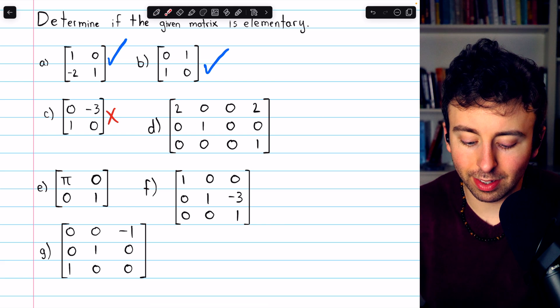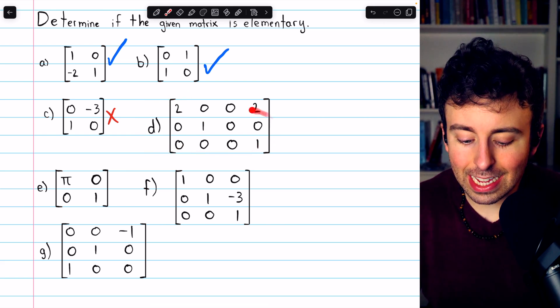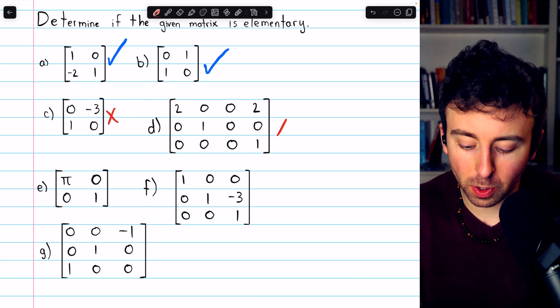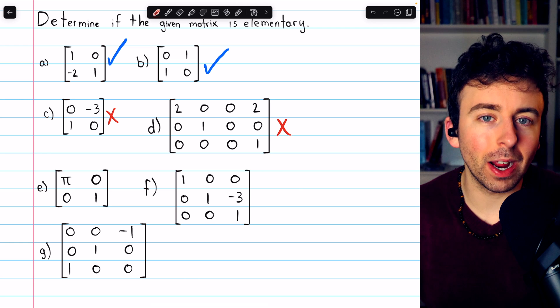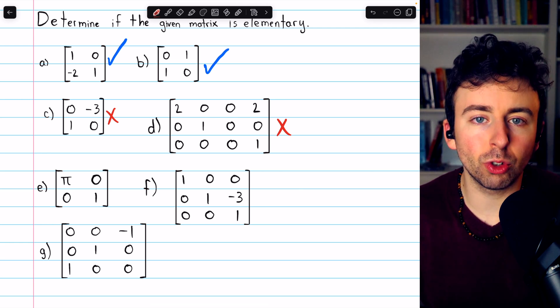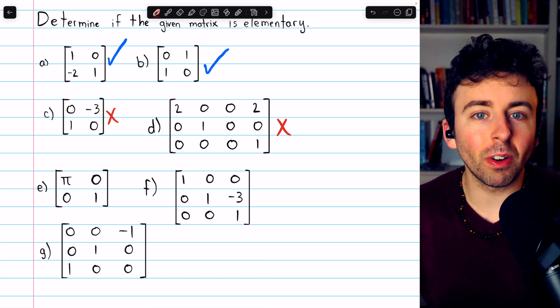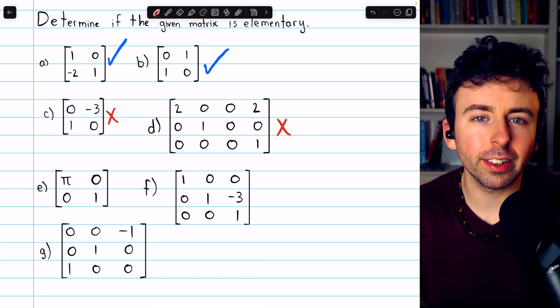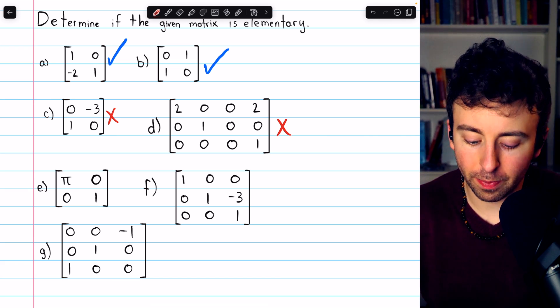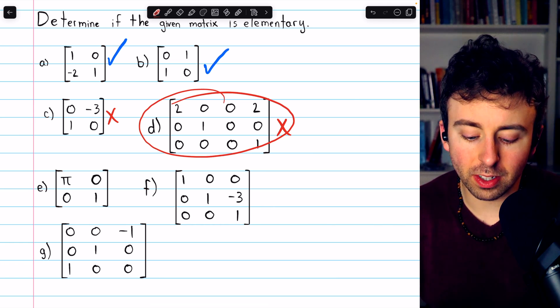Onto matrix D. Matrix D is clearly not elementary because it doesn't even have the right dimensions. It's not square. The identity matrix is a square matrix, so certainly every elementary matrix also has to be square. This is not square, so it's not elementary.